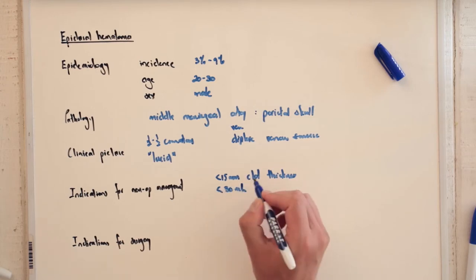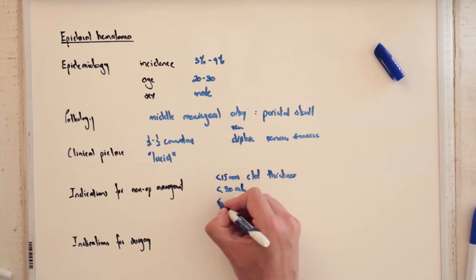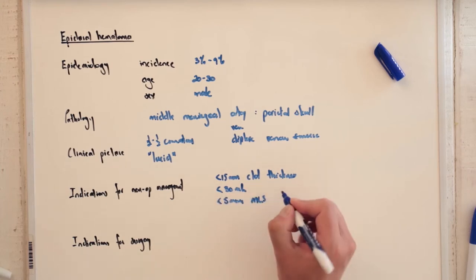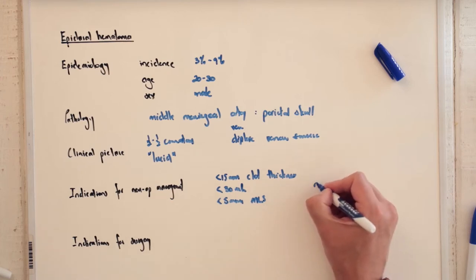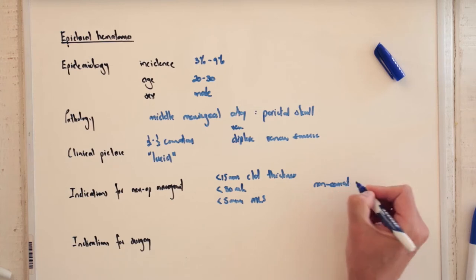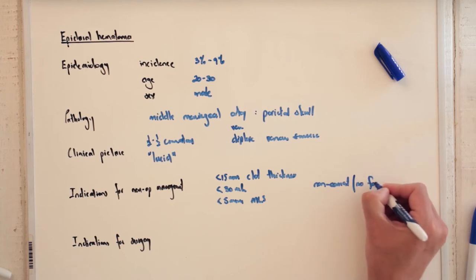And if there is a bit of midline shift it's got to be less than 5mm midline shift. All of these patients have to be non-comatose patients, and they also have to have no focal neurological signs.